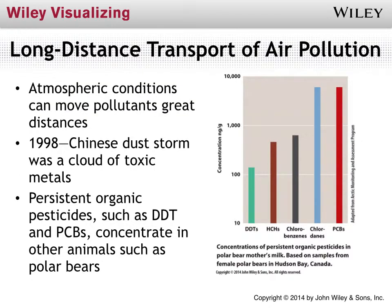So what we're looking at here is the long-distance transportation of air pollutants. These chemicals have the possibility of moving great distances depending on conditions. In 1908, there was a dust storm in China that generated a cloud of toxic metals. Once soil particles and any contaminants get put into the atmosphere, they can be carried long distances by the jet stream — blown thousands of miles from where they were generated — and when they finally come back to earth, they can have a negative impact.